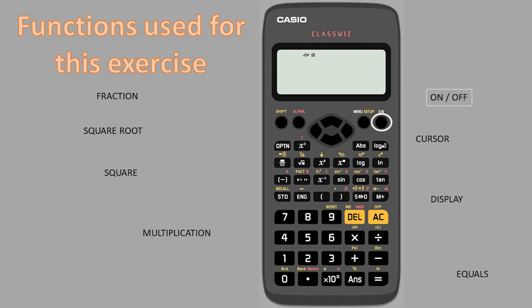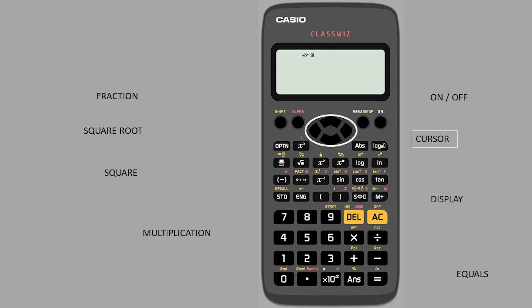The functions used are as follows: on and off, cursor position arrows, display toggle to switch between scientific notation and decimal. We will be using the decimal display. Equals, fraction, square root, square, and multiplication.